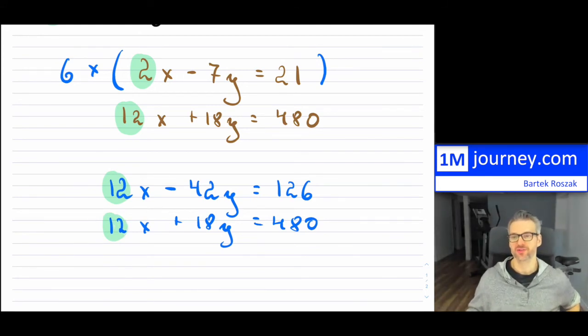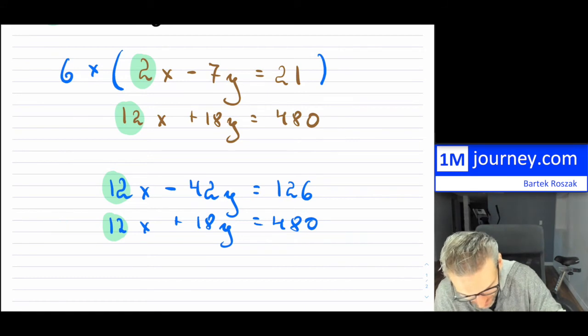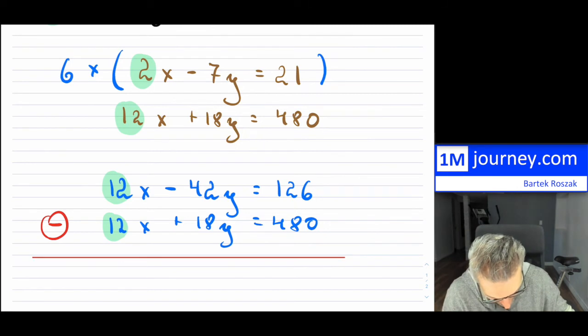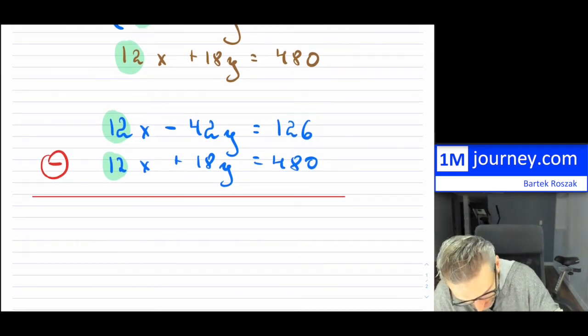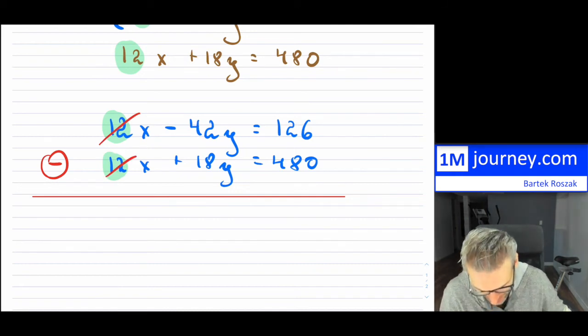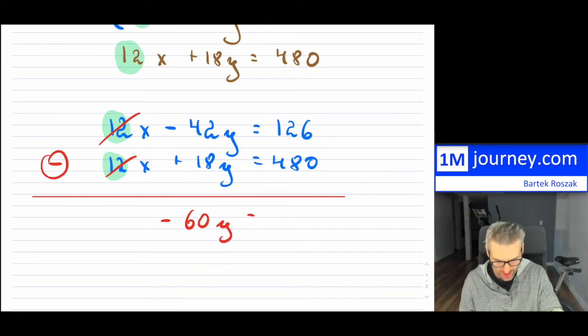So now because these two are the same, then in that case I can just eliminate that variable by just simply subtracting both of these. And then I can solve it. So these two things are gone. Now it's going to be negative 42 minus 18. So that's going to be negative and it's going to be 60y equals...